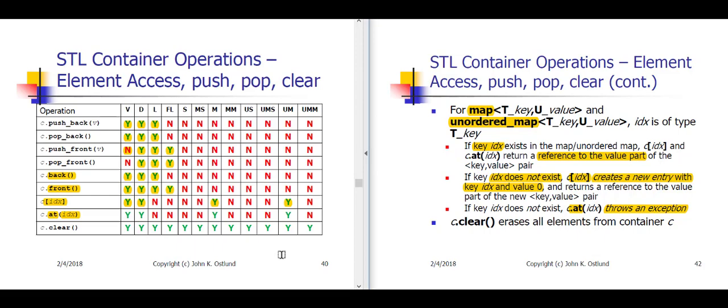Notice that indexing or subscripting is not available for multimaps or for unordered multimaps. This is simply because the keys in a multimap or an unordered multimap are not unique, and therefore if you attempt to look up a particular pair using a key, it's not guaranteed that there will be either zero or one value. Finally, clear is simply used to eliminate all of the elements of a container, and all dozen of the standard template library containers support clear.